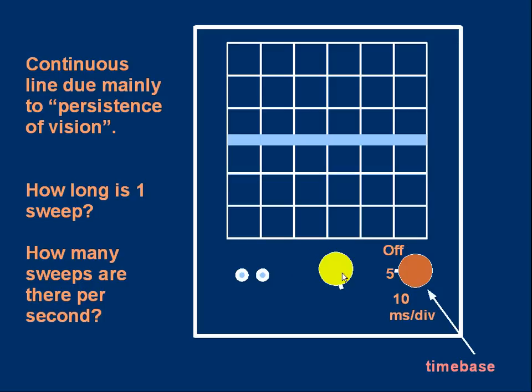Now, the setting we're using is 5 milliseconds per division. That means each horizontal division, there are 6 of them across the screen, each horizontal division represents a time of 5 milliseconds, just like having a graph with X showing the time values, like a time axis across.